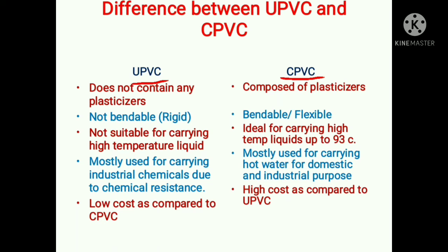Now let's see the difference between UPVC and CPVC. UPVC pipes do not contain any plasticizer, so they are rigid and not bendable. Whereas CPVC pipes are composed of plasticizers, and due to the presence of plasticizers, CPVC pipes are bendable — that is, they are flexible.